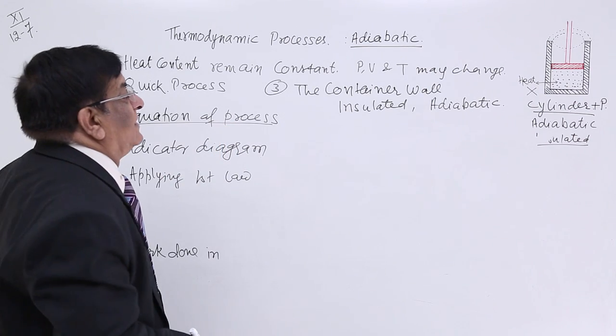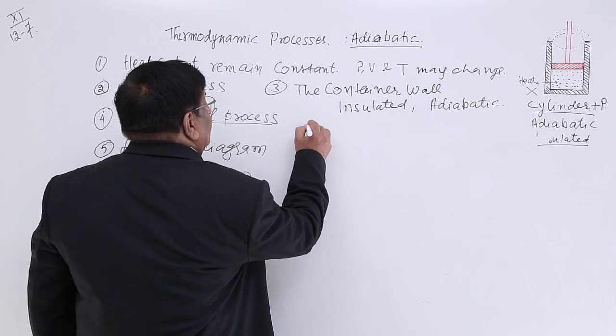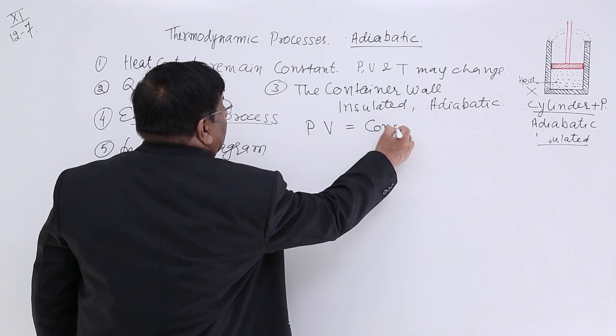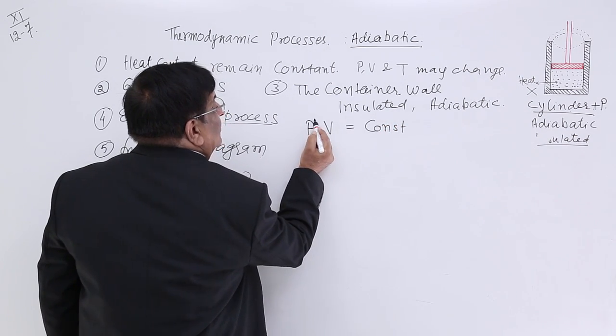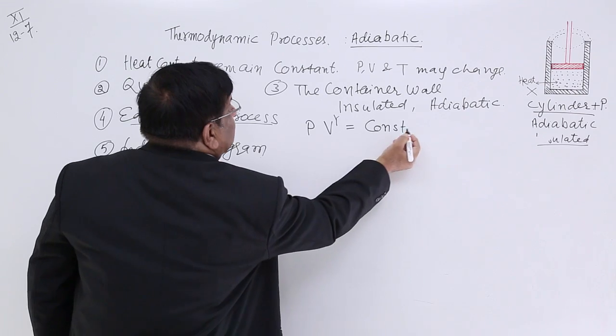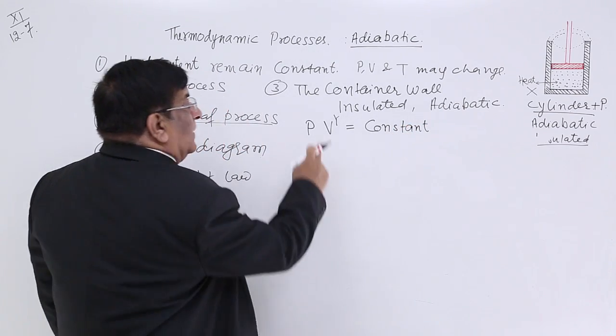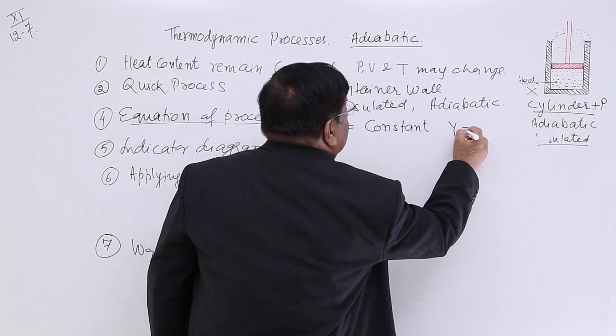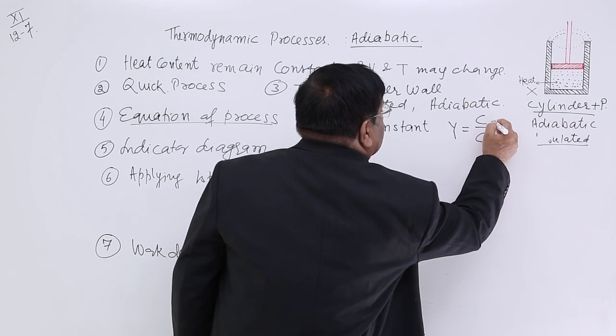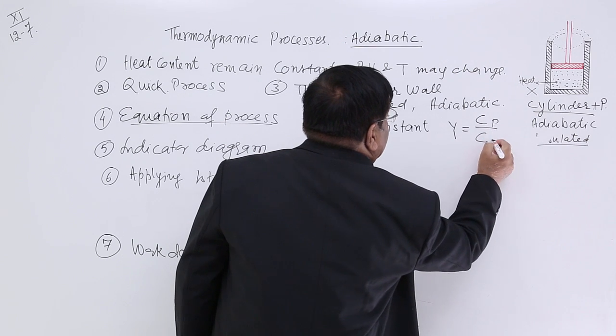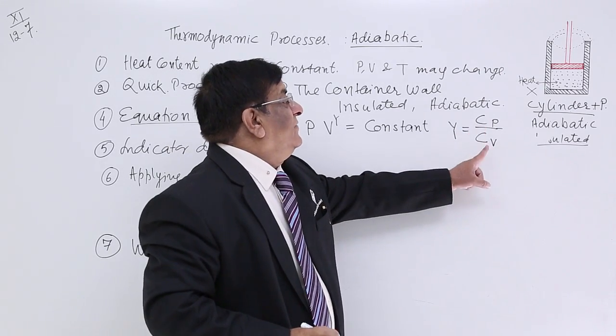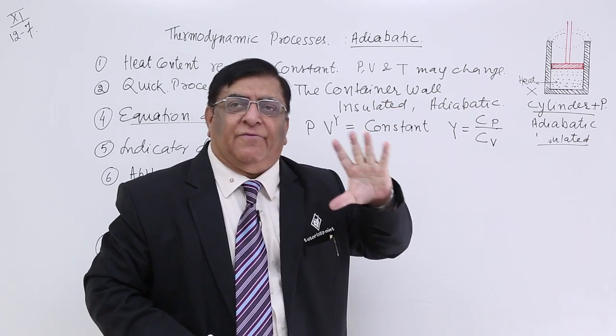Then, equation of this process. The equation of isothermal process was P into V as constant. But, in adiabatic, we find that P and V to the power 1, 1 is not there. Here, P multiplied by V to the power gamma is constant. What is this gamma? So, gamma is ratio of two specific heats of the gas. Which are the two specific heats? Specific heat at constant pressure and specific heat at constant volume. The ratio of Cp, Cv is gamma